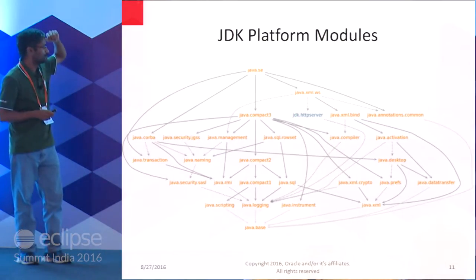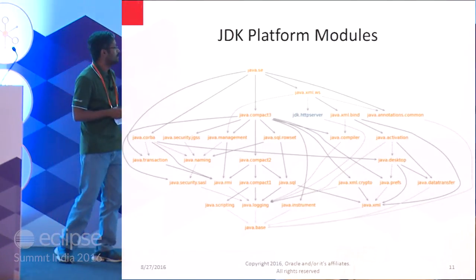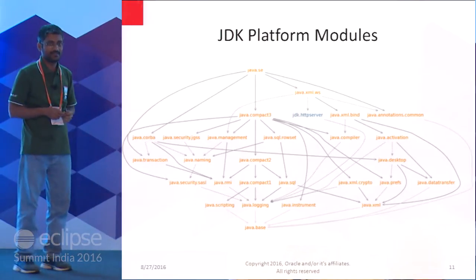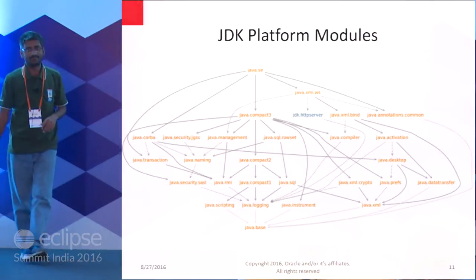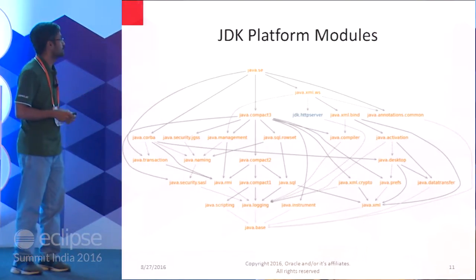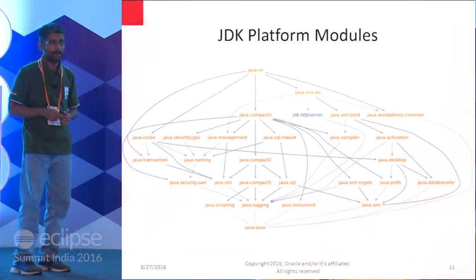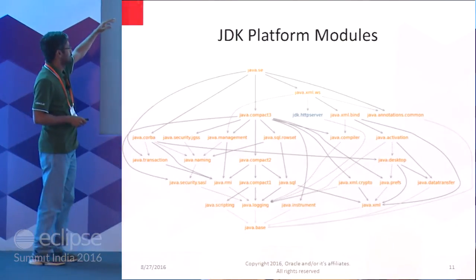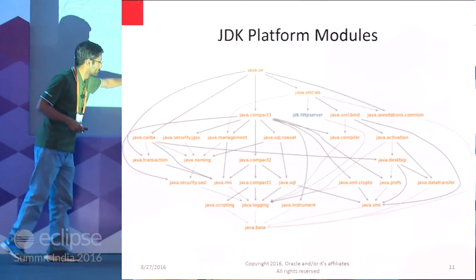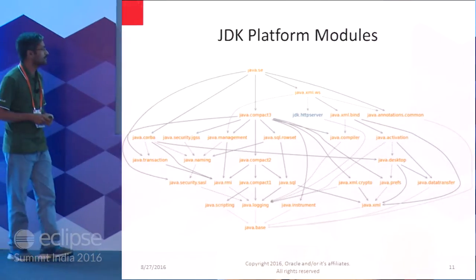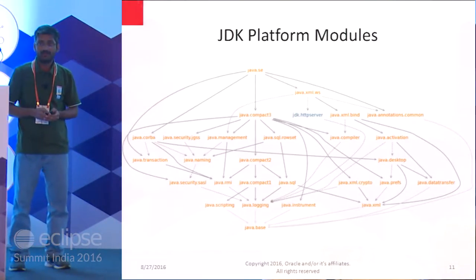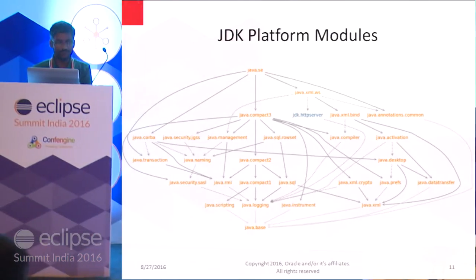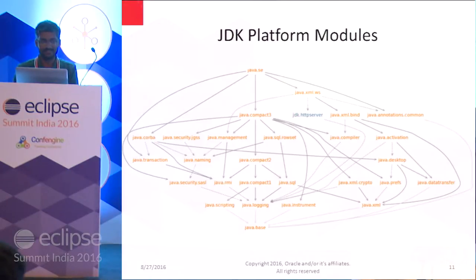You can see the full JDK module graph here. All packages are implicitly dependent on java.base, which is required for any basic JDK image. Another key observation: the graph is acyclic — module graphs must not have any cyclic dependencies. There should not be any cycles within the dependency graph.